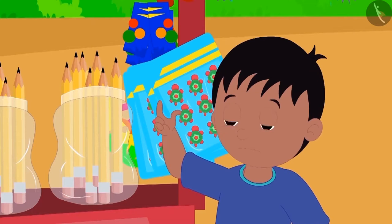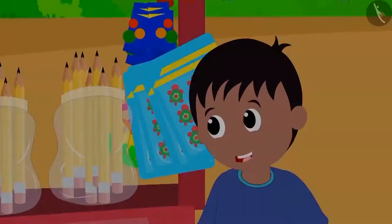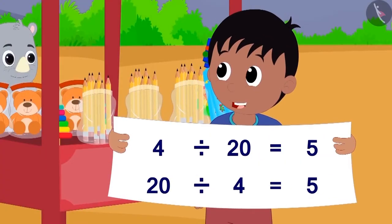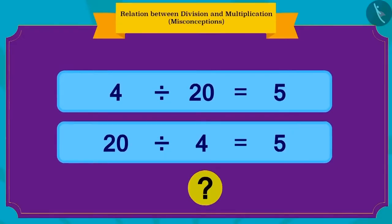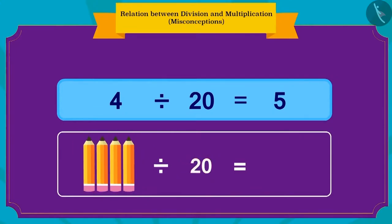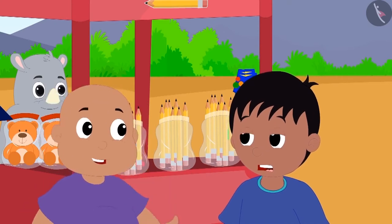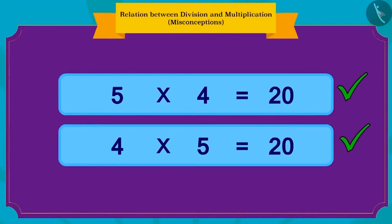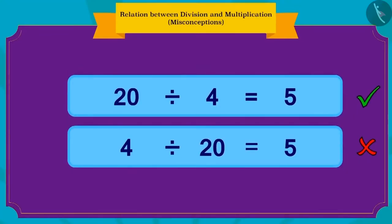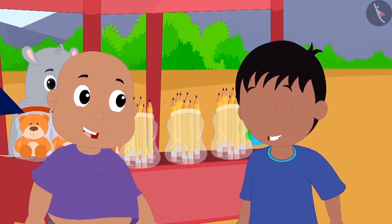Then Raju thought that since division and multiplication are related, he could also write division in two ways. He happily told Babalu he had become an expert in maths. But is the division written by Raju correct? No — what Raju has written is wrong, because he is dividing four pencils in 20 rupees, and that is not possible. Babalu explained that even though division and multiplication have a relationship, we cannot write division sums by changing the places of numbers the way we do for multiplication.